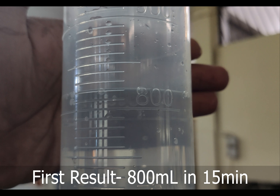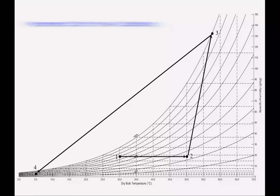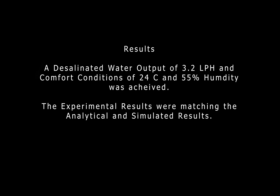The first set of results showed 800 ml of desalinated water generated in 15 minutes. The psychrometric chart for the air conditioning part of the unit was also plotted. The final results obtained were a desalinated water output of 3.2 liters per hour, and comfort conditions of 24°C and 55% relative humidity were achieved. The experimental results were matched with analytical and simulated results.